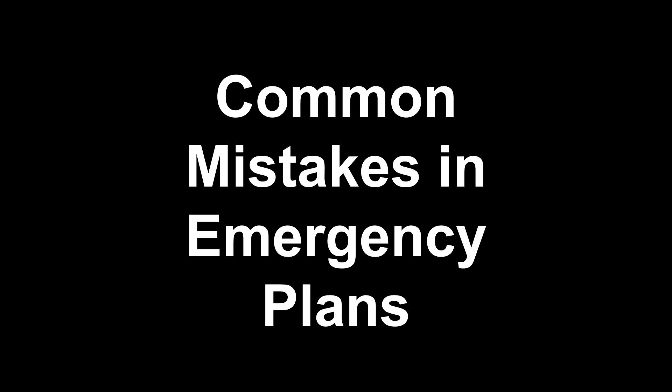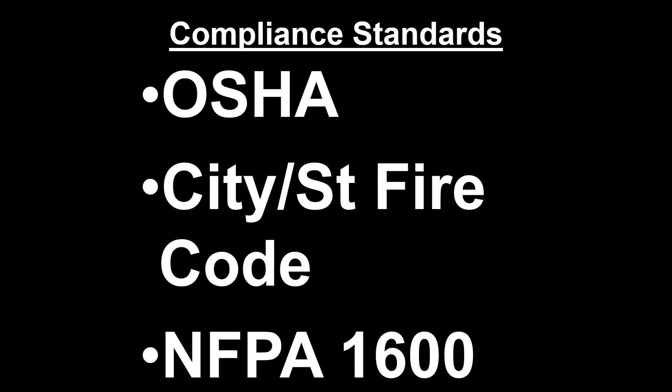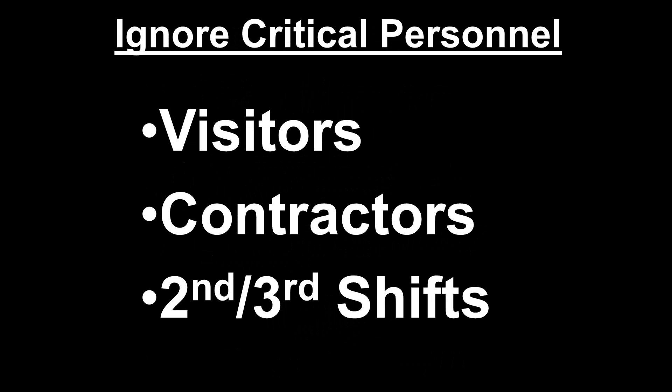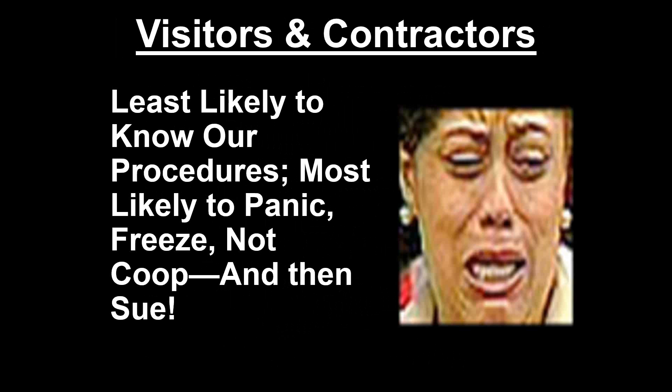Common mistakes in emergency plans: first, not being compliant with OSHA, the city/state fire code, and NFPA 1600. Second, not paying attention to visitors, contractors, and second and third shifts — any person on your premises at any time during the week is your responsibility for emergency action planning and training. Visitors and contractors are the least likely to know your facility and the most likely to panic, freeze, not cooperate, then sue and win.